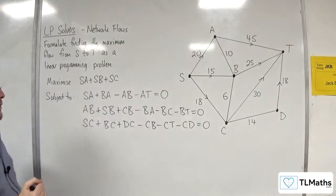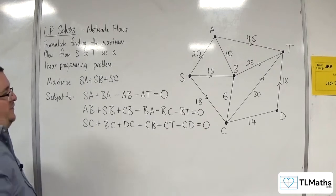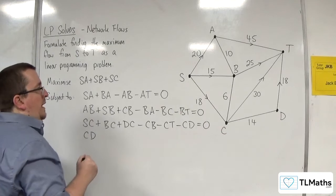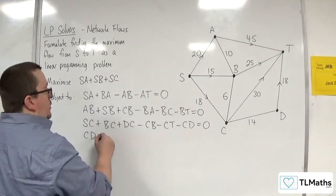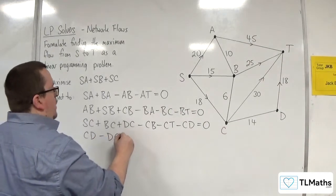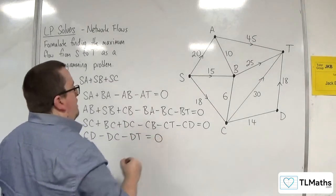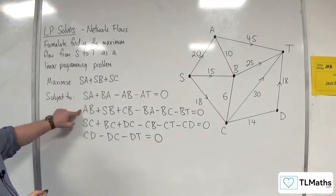Now, for vertex D, routes in are just CD. And routes out could be either DC or DT. So we've got one for A, B, C, and D.